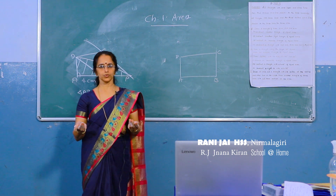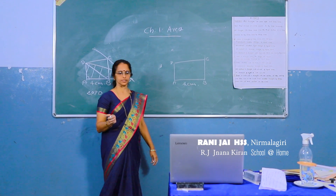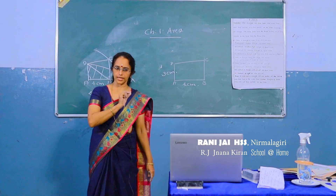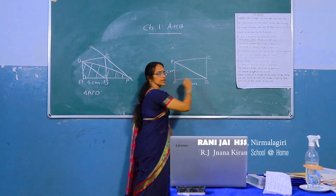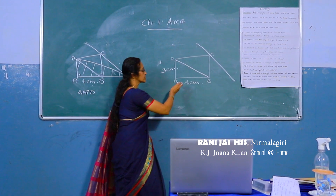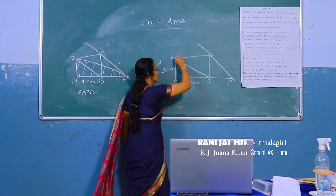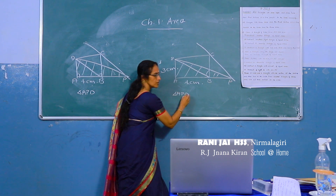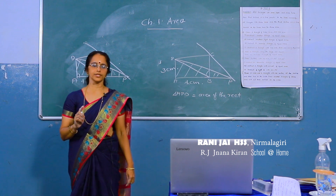You can also convert a rectangle into a triangle of equal area. Draw a rectangle with one side 4 cm and the other side 3 cm. Then, as in the previous case, draw diagonal BD, draw a line parallel to BD through C, and extend AB to meet that line at point P. Join D to P. Here also we get triangle APD whose area is the same as the area of the rectangle.